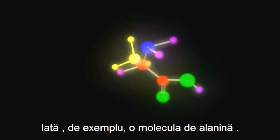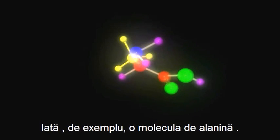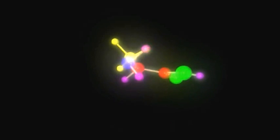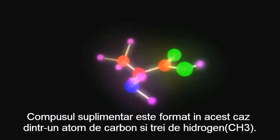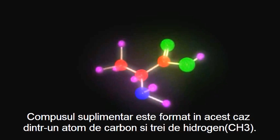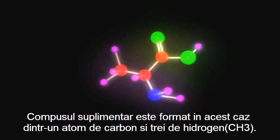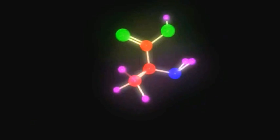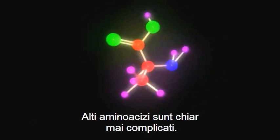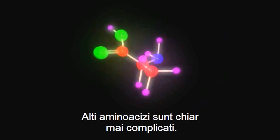Here is a molecule of alanine. And as you can see, the side chain is a carbon with three hydrogens attached. Other amino acids are even more complicated.